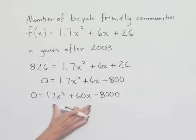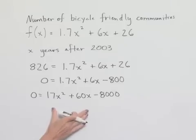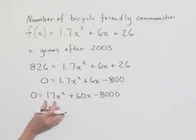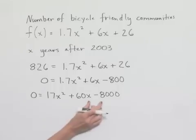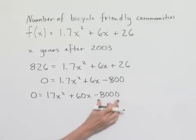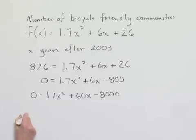Now, we might be able to factor this, but if nothing comes to mind readily, then what we would do is resort to the quadratic formula, where A value is 17, our B value is 60, and our C value is negative 8,000. Let's now solve for x using that.